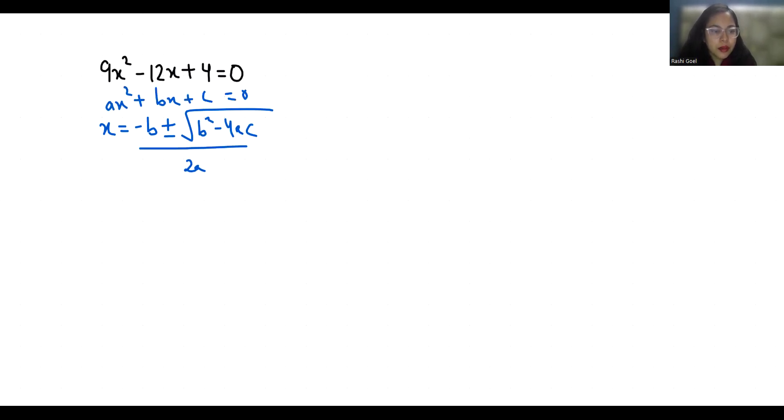So a = 9, b = -12, and c = 4. So x = -(-12) ± √((-12)² - 4(9)(4)) / 2(9).